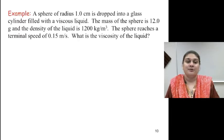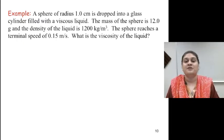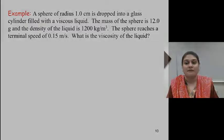As an example, a sphere of radius 1 centimeter is dropped into a glass cylinder filled with a viscous fluid. The mass of the sphere is 12 grams, and the density of the liquid is 1200 kilograms per meter cubed, so it is definitely thicker than water. The sphere reaches a terminal speed of 0.15 meters per second. What is the viscosity of the liquid?